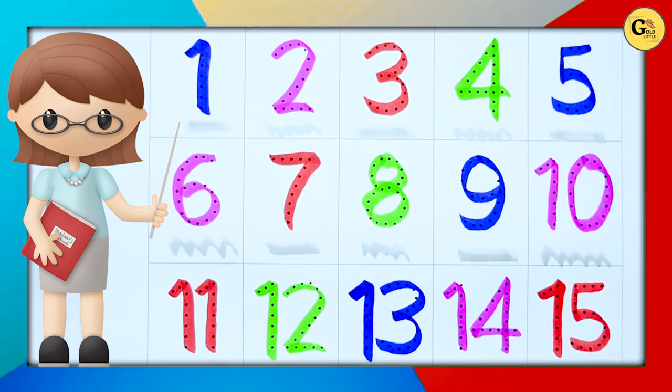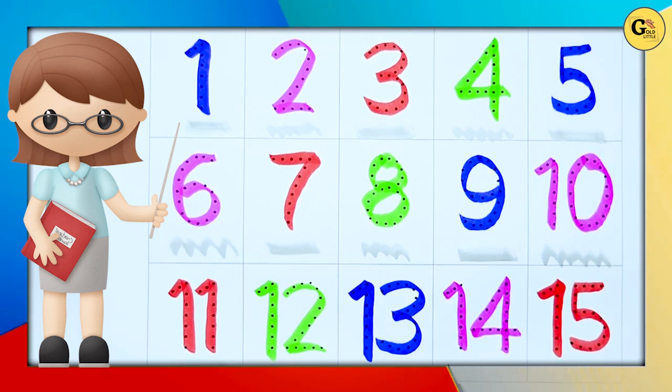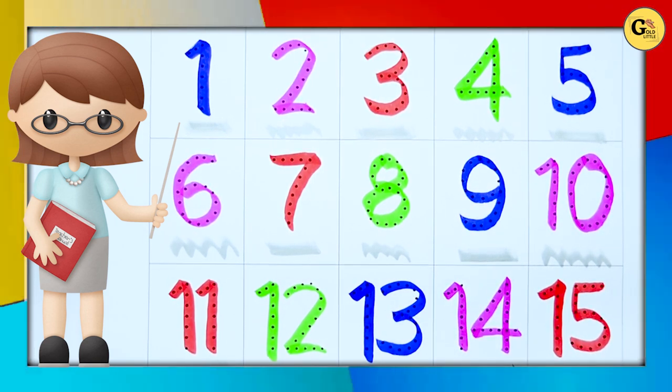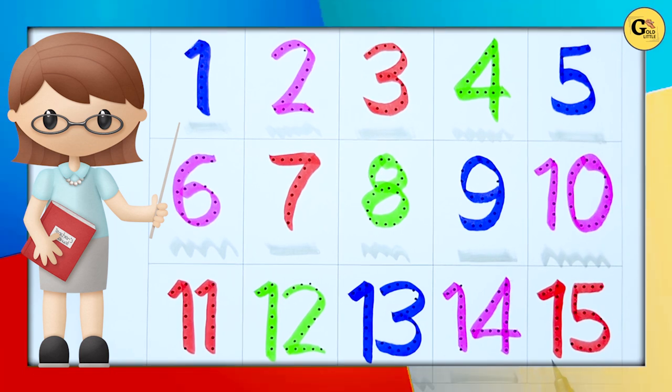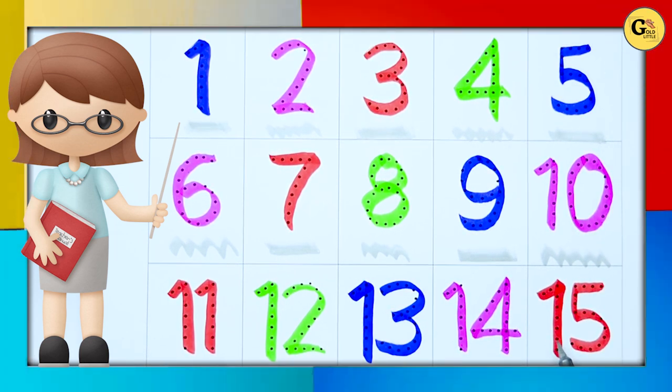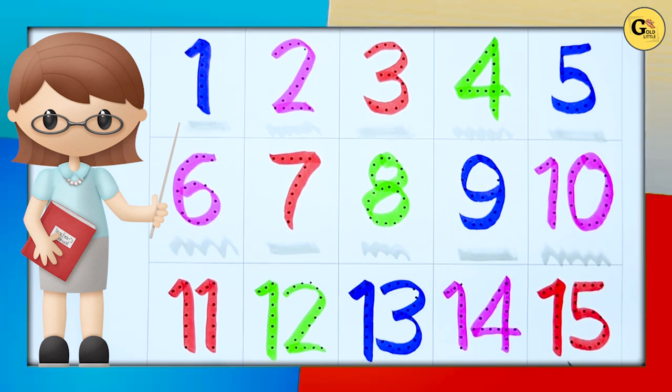1, 3, 13 with blue color. 1, 4, 14 with pink color. Which number is this? 1, 5, 15. It's a red color.